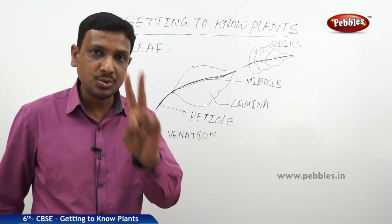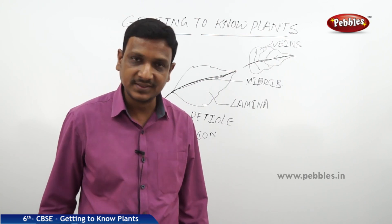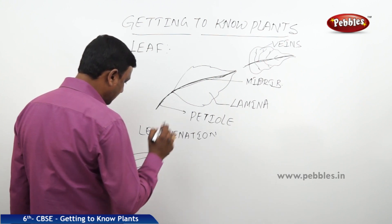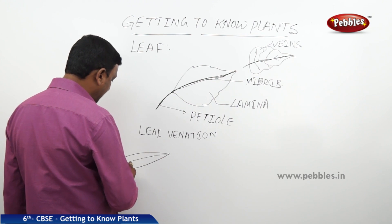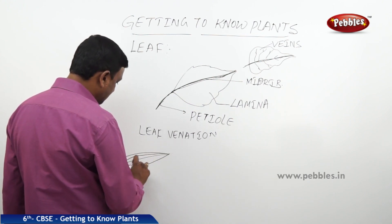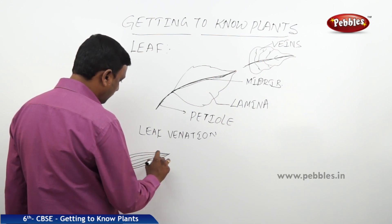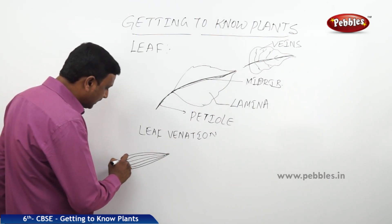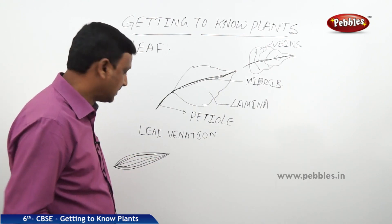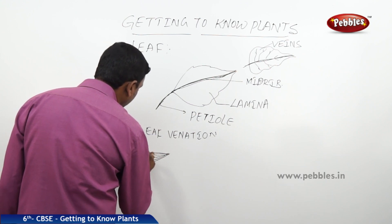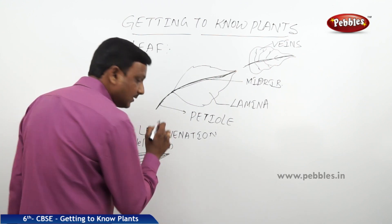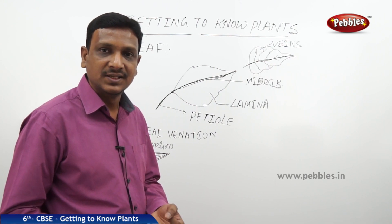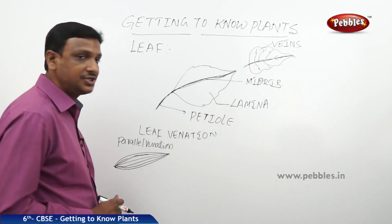Generally we find two different types of venation in leaves. In some leaves, the veins arise at the petiole and extend till the tip of the leaf with no branches — the veins run parallel to each other. This is called parallel venation, and it is especially seen in plants like grass, rice, wheat, maize, and sugarcane.